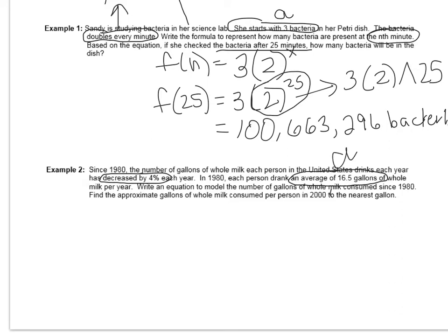Write an equation to model the number of gallons of whole milk consumed since 1980. So in this example, we're going to say 1980 is equal to year 0. Then they're asking us to approximate the gallons of whole milk consumed per person in the year 2000. Well, 2000 is 20 years after 1980. So 2000 is year 20.